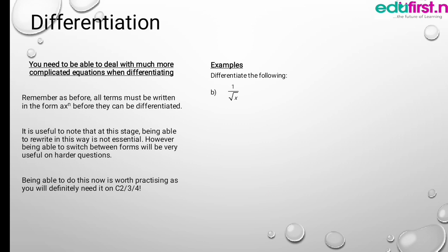Another example — this is an example of a fraction. Differentiate 1 over the square root of x. Rewriting it in the form ax to the power n, we have x to the power minus one half. Now differentiate: dy/dx equals minus one half x to the power minus 3 over 2.